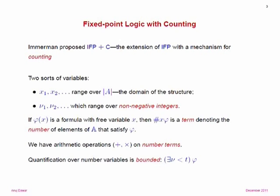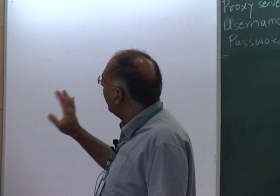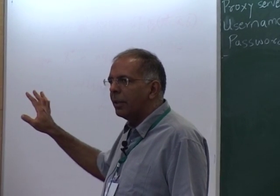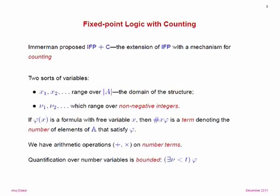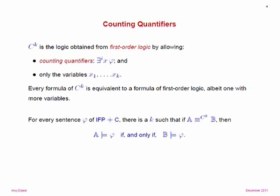In the first half of this talk, I'll tell you why IFP+C is too weak. To analyze the expressive power of fixed-point logic with counting, we look—as we did with IFP itself—at a logic with a bounded number of variables. You may be detecting a theme: we take various logics and, to analyze their expressive power and prove inexpressibility results, we identify an equivalence on structures, typically analyzed by means of a game like an EF game.